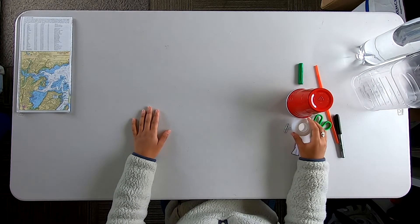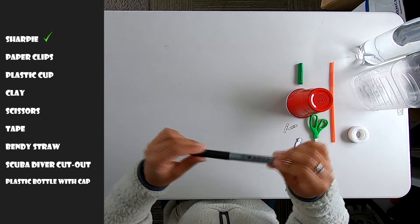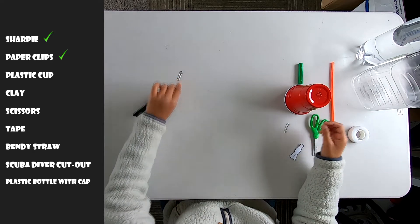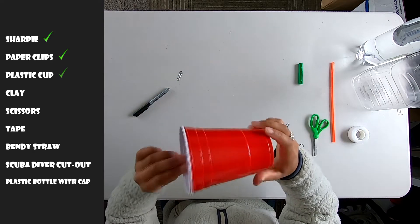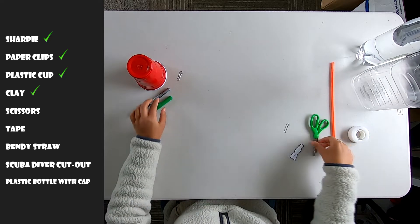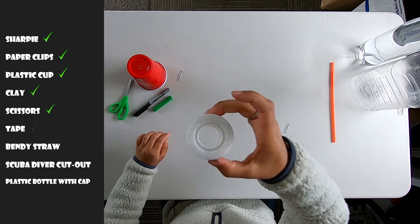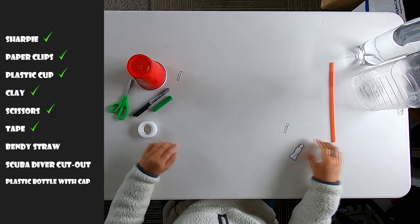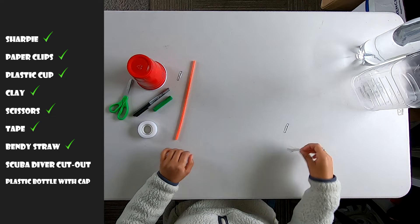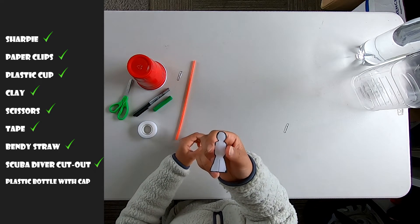Alright, so for this activity you're going to need a few materials. You need a sharpie, paper clips, a plastic cup, some clay, scissors, tape, a bendy straw, and the cut out of a scuba diver which you can get at piersparksailing.org.